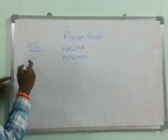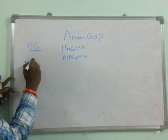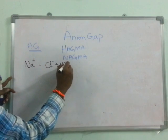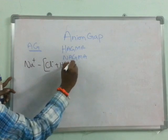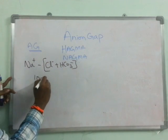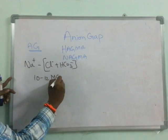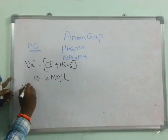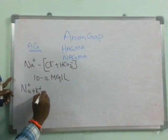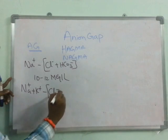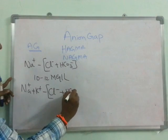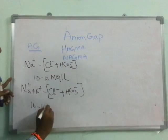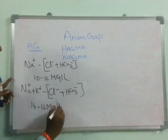Anion gap is the difference between the positive charges and the negative charges in the body. Usually it is 10 to 12 milliequivalents per litre. In some books it is also taken as Na+ plus K+, adding the potassium component, so it will come roughly about 14 to 16 milliequivalents per litre.